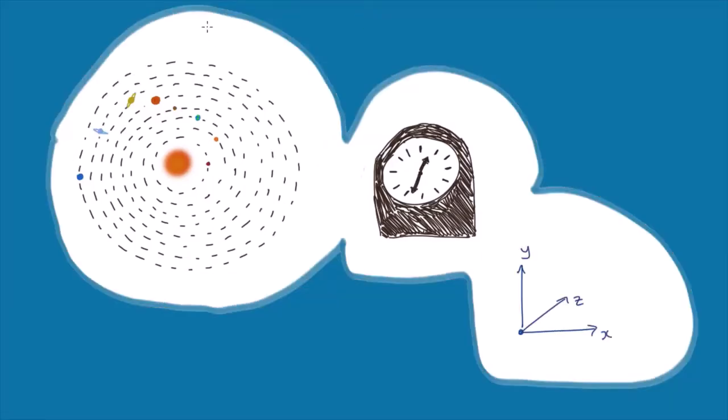Or secondly, are there any problems we can find with Newton's law of universal gravitation? At this stage, we're going to take a brief diversion to discuss Einstein's theory of special relativity. A consequence of this theory, which you'll learn about in further detail later, is that nothing can travel faster than the speed of light in a vacuum, C.